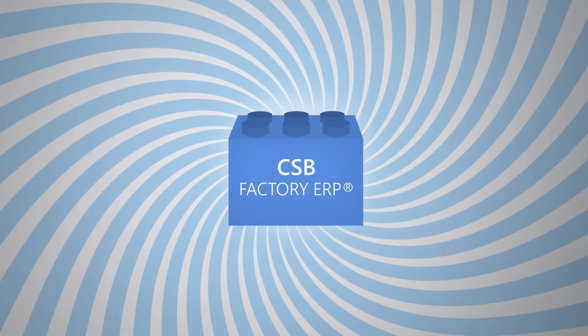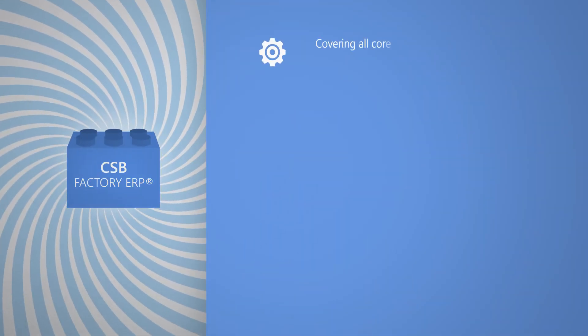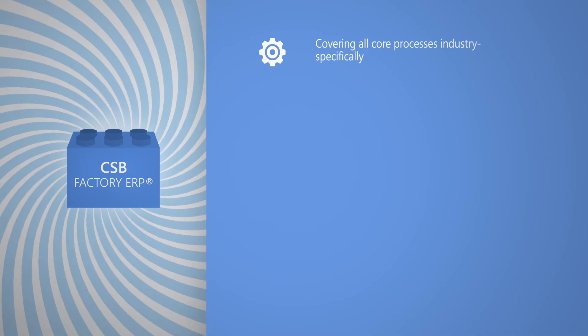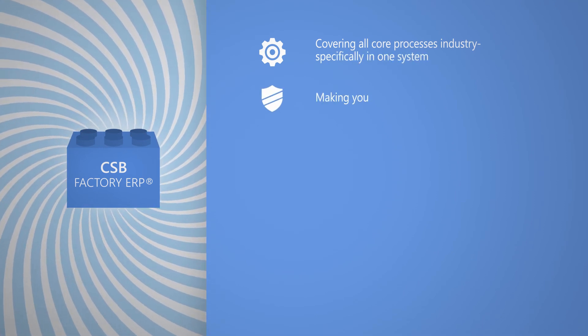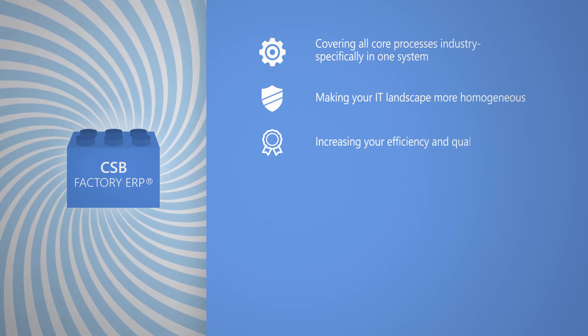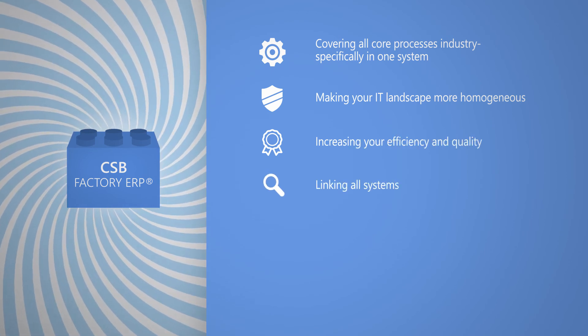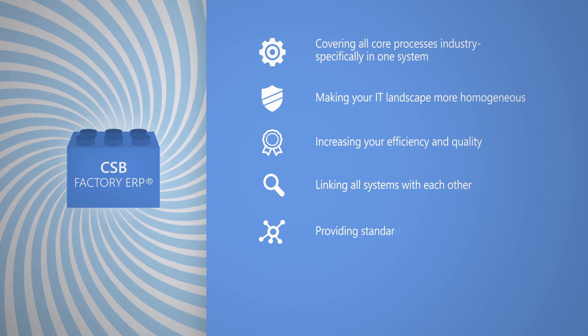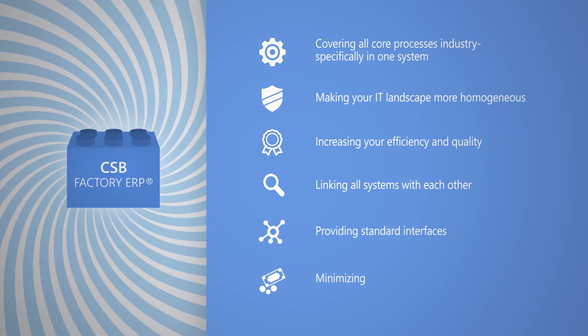The factory ERP by CSB system covers all core processes, industry specifically, in one system. Making your IT landscape more homogenous, increasing your efficiency and quality. Linking all systems with each other, providing standard interfaces, and minimizing your costs.